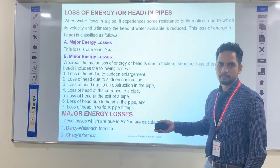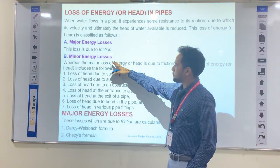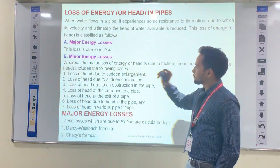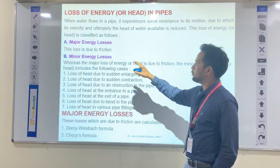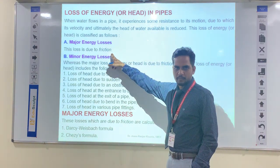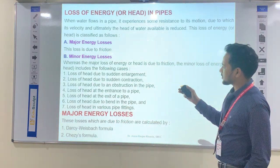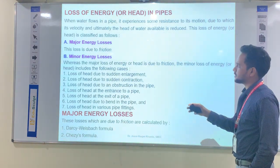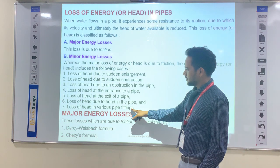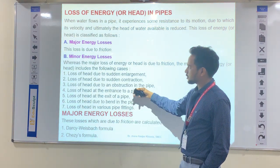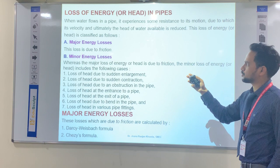These losses of energy or head losses are classified into two categories: major loss and minor loss. In major loss, this is basically the head loss due to friction. The second category is minor losses, and there are seven losses. We will discuss them one by one, starting with major loss due to friction.